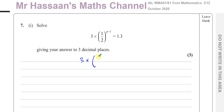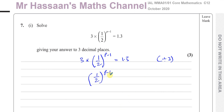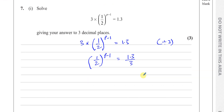The first thing to do is always isolate the term which has the unknown. So I would divide both sides by 3 first to get rid of this 3. Dividing both sides by 3, you get a half to the power of P minus 1 equals 1.3 divided by 3. We can put that as 13 over 30, which doesn't simplify.